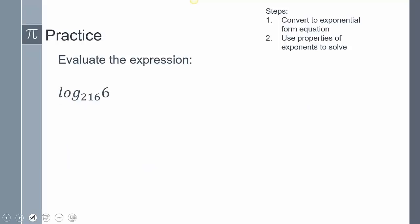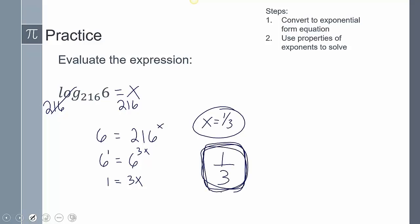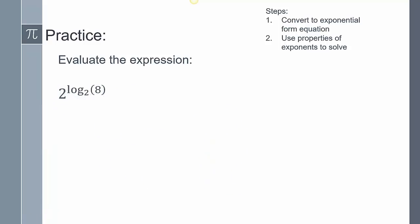Now give this one a shot. For log base 216 of 6: set it equal to x, convert to exponential form by taking base 216 to both sides, so 6 equals 216^x. Since 216 equals 6^3, we have 6 equals (6^3)^x, which is 6^1 equals 6^(3x). Setting exponents equal: 1 equals 3x, so x equals 1/3. Since x can't be in our final answer, log base 216 of 6 equals 1/3.